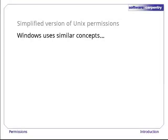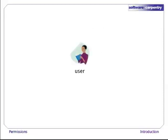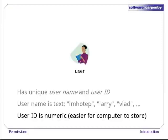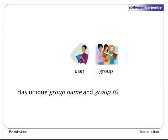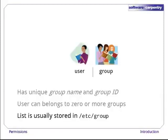The concepts are similar but the rules are different, and unfortunately there's no exact mapping between Windows rules and Unix's. Let's start with a single user. She has a unique username and user ID. Her username is textual, and her user ID is an integer. It might seem redundant to have this as well as her username, but integers are easier for computers to work with. Computers also manage groups — each group has a unique group name and numeric group ID. The system administrator can put a user in any number of groups. The list of who's in what group is usually stored in the file /etc/group.